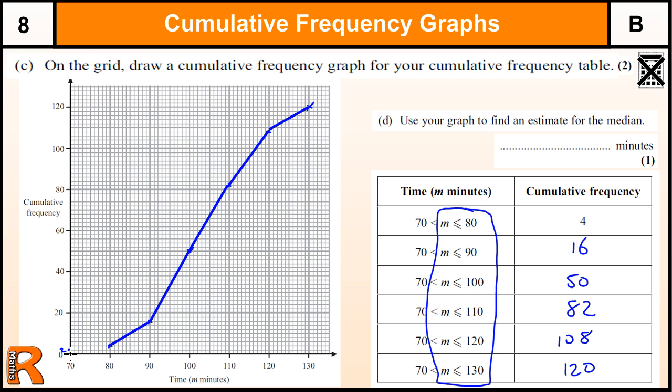Now you don't have to join this up to zero. But you can do, because you know when at 70 there are no values. So we can join that up. So that would be two marks for drawing that graph.